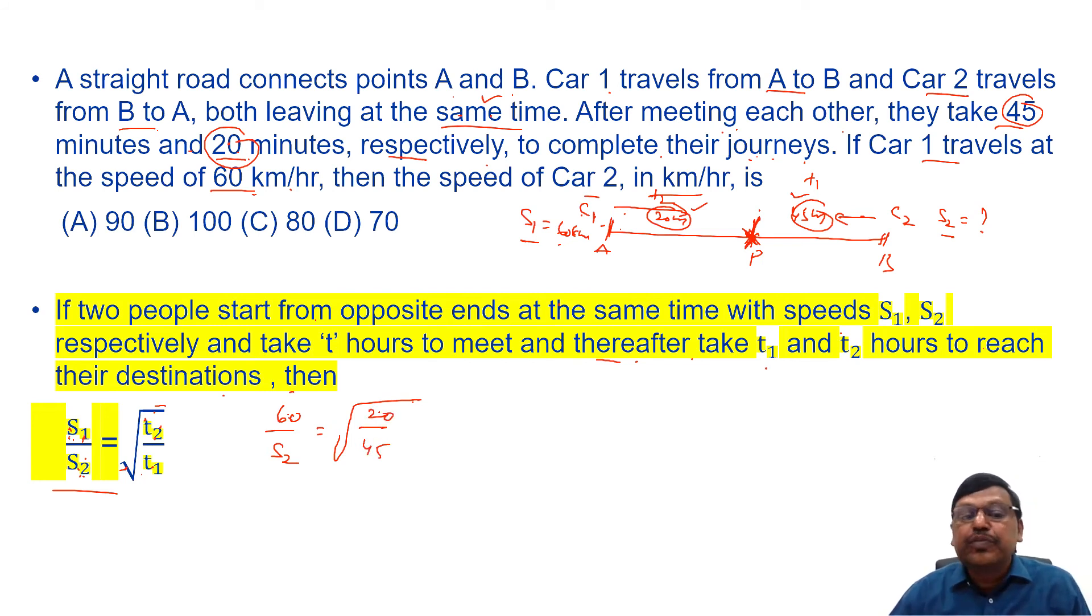But you may have a doubt, speed is in kilometers per hour, time is in minutes. See when you say this is 20 by 60, this is 45 by 60, 60 gets cancelled, that's why I'm ignoring it. So you can see 5, 4's, 5, 9's, it is nothing but 4 by 9. 60 by S2 equals to 2 by 3. We can say S2 equals to 90 kilometers per hour.